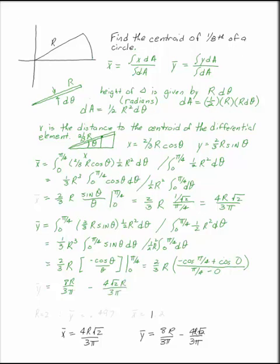That looks like 8r over 3 pi minus 4 over square root of 2 r over 3 pi. The second part is almost the same except we're dealing with an offset and a negative sign. If you plug r equal 2 in here just to get a feel for whether we're dealing with numbers that are correct or not, we can show that y bar is equal to 0.497 and x bar is equal to 1.2. And those are very reasonable numbers.